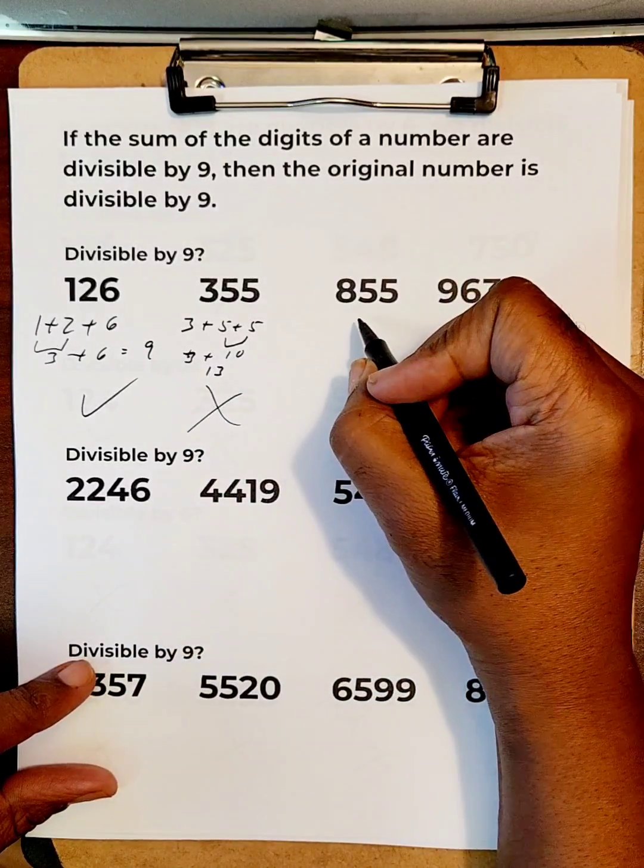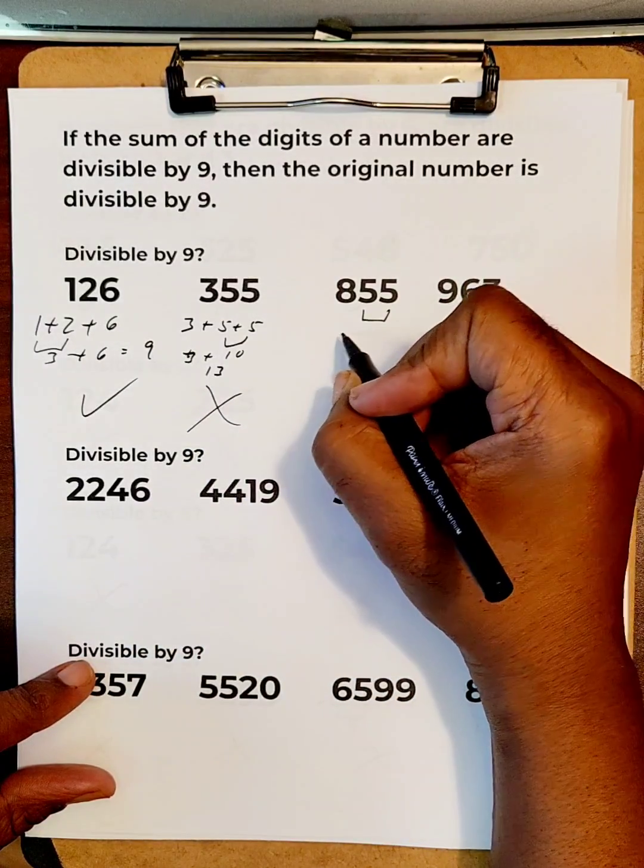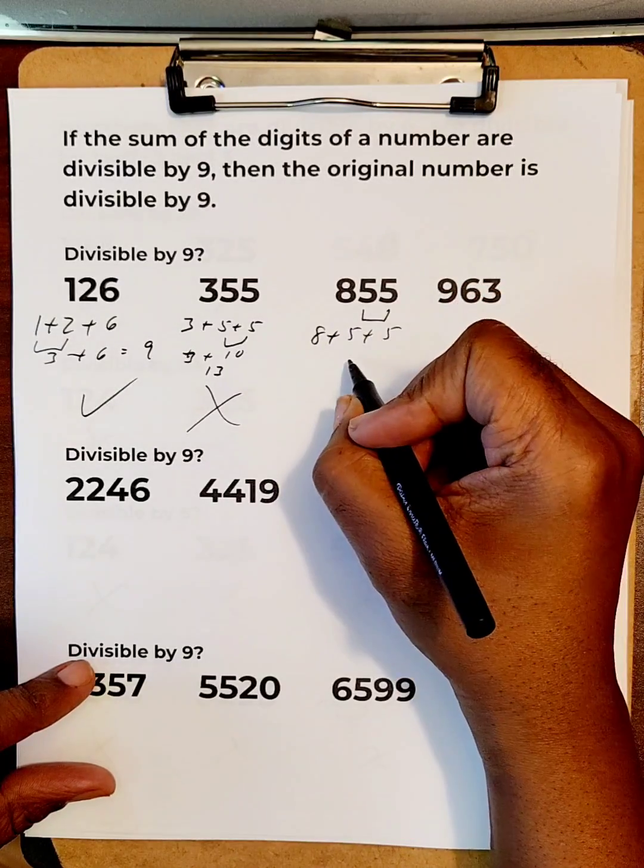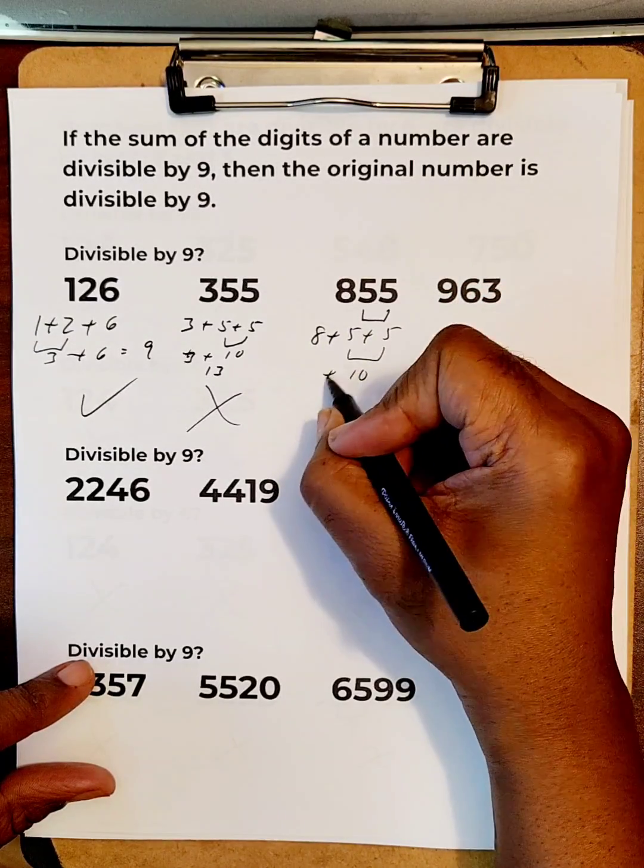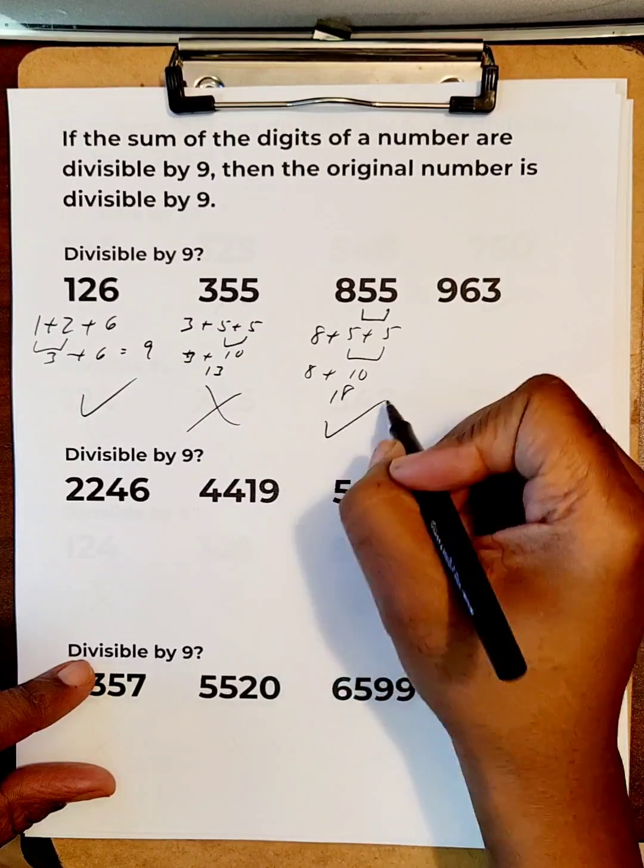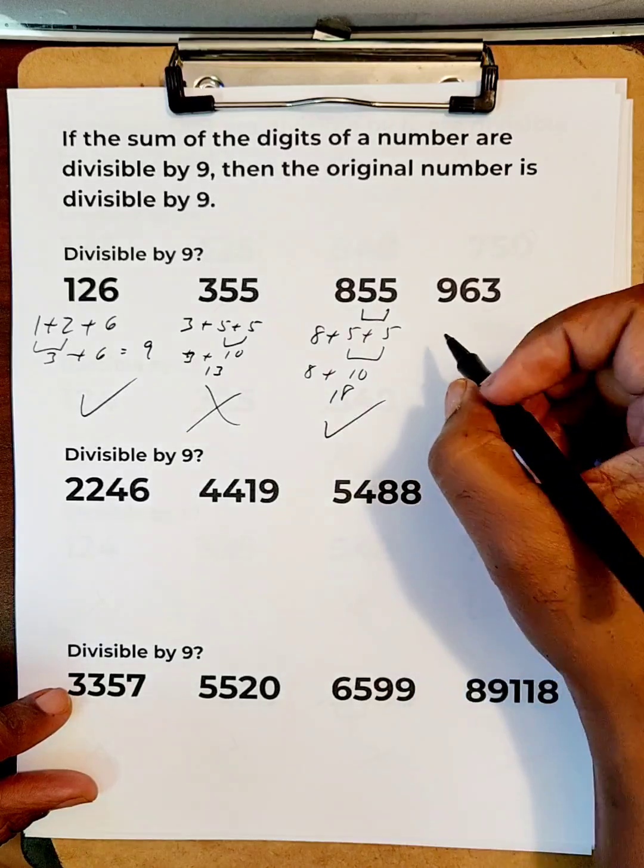Let's try this. 5 plus 5. 8 plus 5 plus 5 will get 10 plus 8 more, which is 18. That's in the 9 timetables, so the original number 855 is in the 9 timetables.